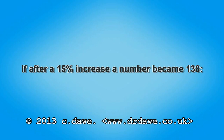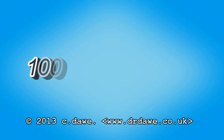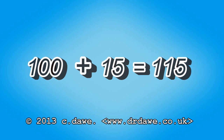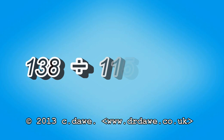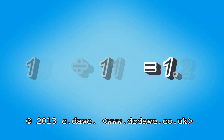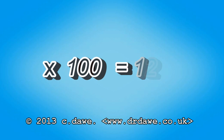If, after a 15% increase, a number became 138: add 100 to 15 to get 115. Divide 138 by 115 to get 1.2. Multiply this by 100 to get 120, which was the original number.